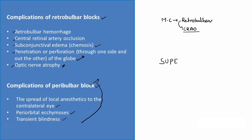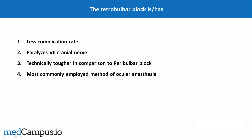The take-home point: peribulbar block is superior over retrobulbar block. Reviewing the question — retrobulbar block does NOT have less complication rate; it has the highest. It does NOT paralyze the 7th cranial nerve — that is done by peribulbar block via orbicularis oculi. Option 3 — technically tougher in comparison to peribulbar block — is correct, since we have to inject into the muscle cone. Option 4 is wrong; the most commonly employed method is peribulbar block. The answer is option 3.